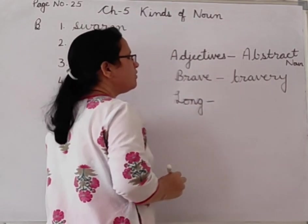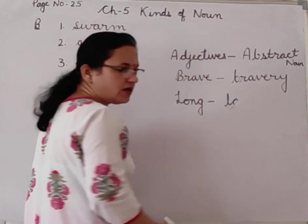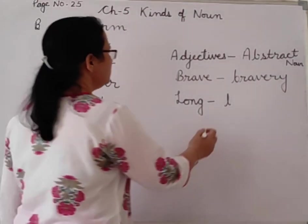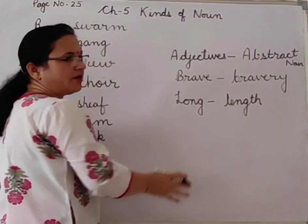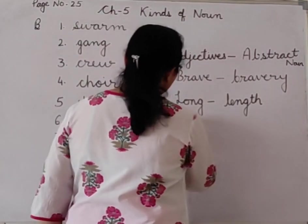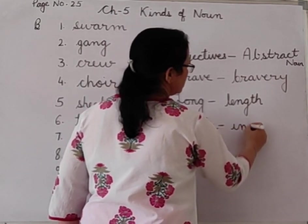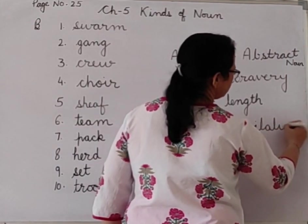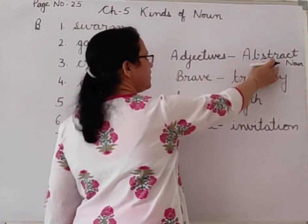Another example: long. The abstract noun formed from long is length — L-E-N-G-T-H. Another: invite — the abstract noun formed is invitation. So you can form abstract nouns from adjectives and verbs as well. Examples are given to help you understand.